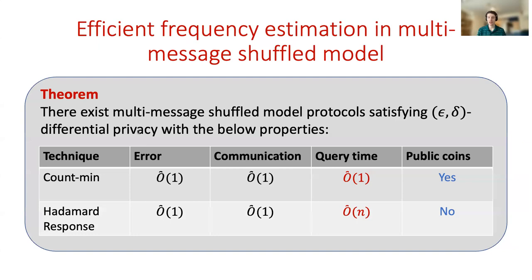Our main theorem for frequency estimation in the multi-message shuffle model shows that there exist protocols which are epsilon-delta differentially private with the following properties. We consider two protocols: one based on the count-min sketch, and one based on the Hadamard response. Both have error polylogarithmic in N and B, and communication polylogarithmic in N and B. They differ in query time: the count-min sketch uses public coins but has polylogarithmic query time; the Hadamard response uses only private coins but has query time roughly order N, linear in the number of users.